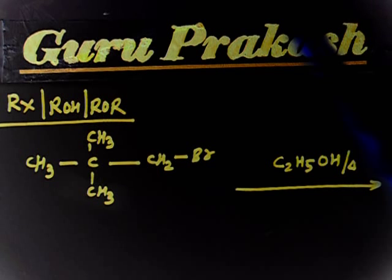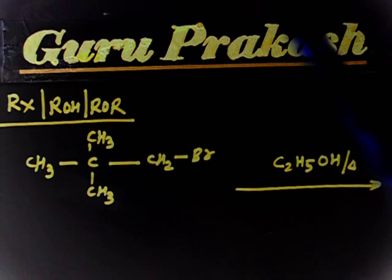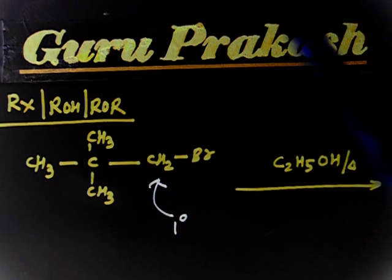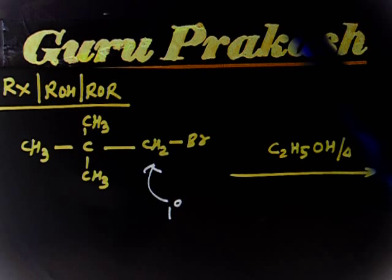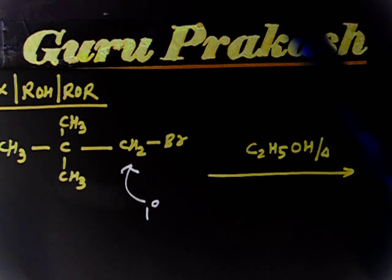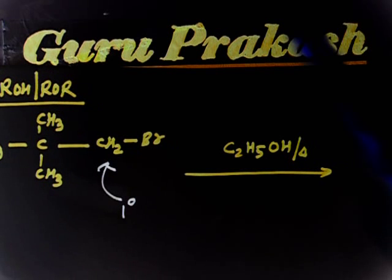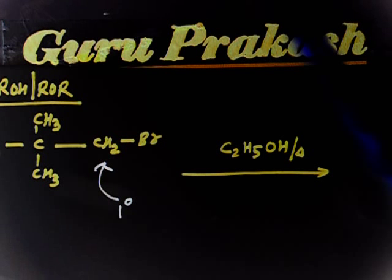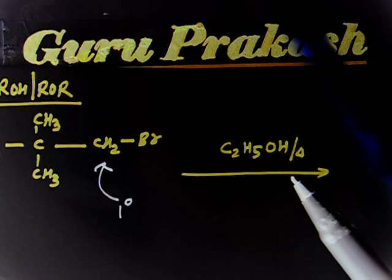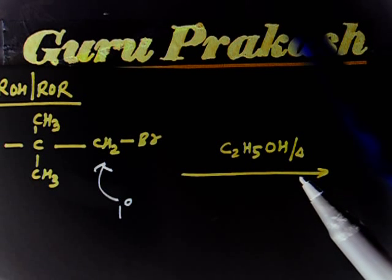Let us discuss this reaction. This is an alkyl halide — specifically a primary alkyl halide, so this is a one-degree carbon. This compound reacts with C2H5OH, which is a nucleophile. It is a neutral nucleophile, and a small amount of heating is also given in this problem. You have to find the product.